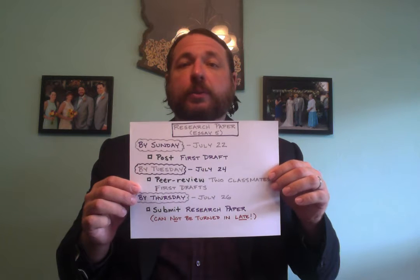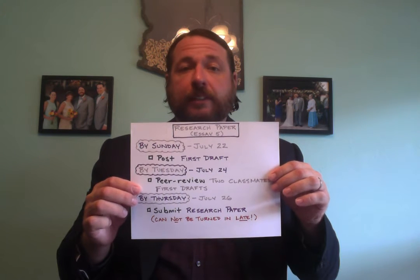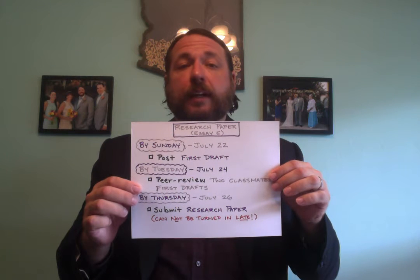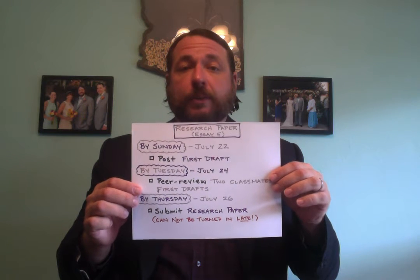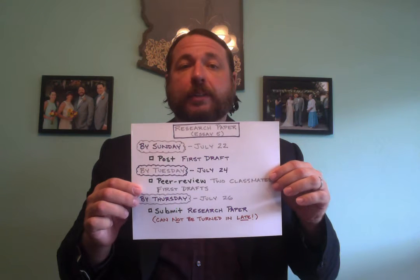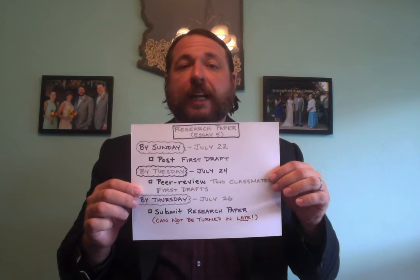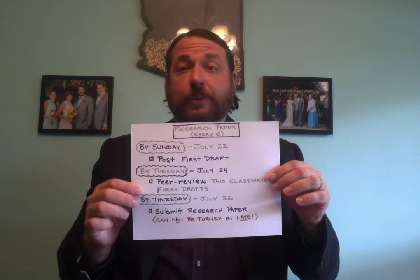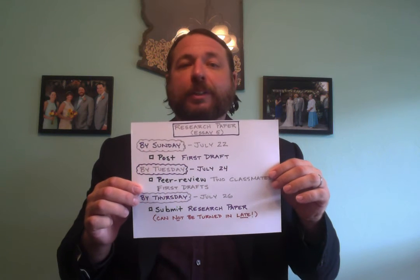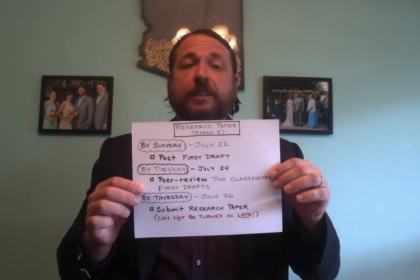Peer review two of your classmates' first drafts of their respective essays. Finally, by 11:55 p.m. on Thursday, July 26th, you need to accomplish your sixth academic task for Module 5 — your last task for English 100 this summer. Publish your research paper by submitting it to me.